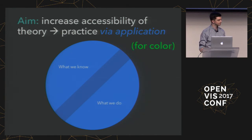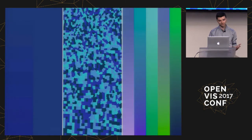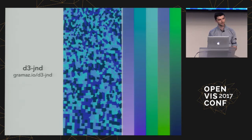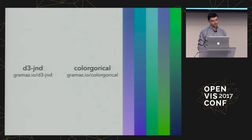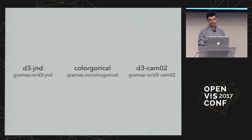Specifically for color, there will be three different projects, all thematically connected. The first is a D3 module I made that helps calculate just noticeable differences. The next project, called Colorgorical, is a design assistance tool for making categorical color palettes. The last is another D3 module implementing a new color space — a successor to LAB space — which we heard about earlier in the day.